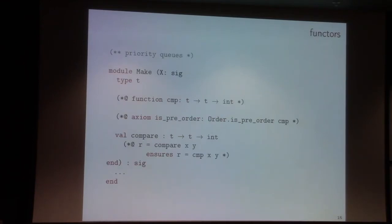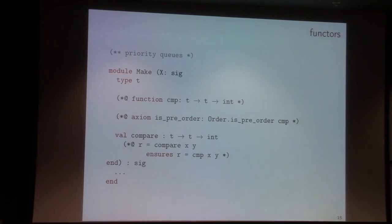Let's talk about functors. Building a library in OCaml will eventually use some functors. In our case, we have an implementation of priority queues using a Make functor. In the context of Vocal, we are able to use our specification language to talk about and specify some properties of our functor argument. In this case, I say that the compare function I'm giving as my functor argument actually behaves as a pre-order. And then this can be exploited inside the implementation.